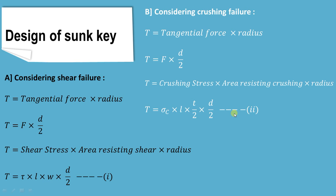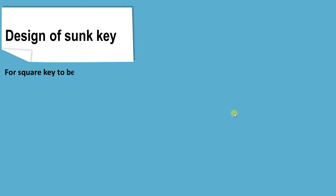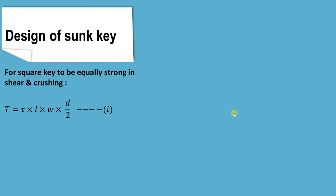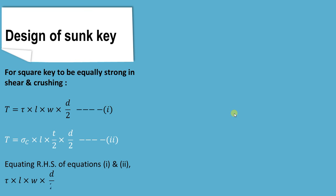Now we consider the square key. For the square key to be equally strong in shear as well as in crushing, we consider both equations — the shear failure equation and the crushing failure equation. We want the strength of the key to be the same in both shear and crushing, so we equate these two equations. Since the left-hand side is the same (torque), we equate the right-hand sides and cancel length L and radius D by 2 from both sides.